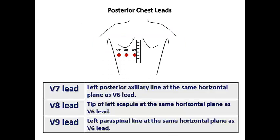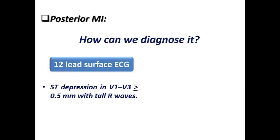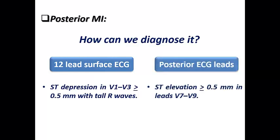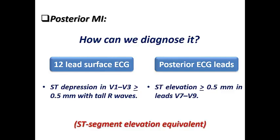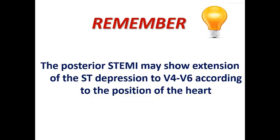The posterior ECG leads V7, V8, and V9, placed at the anatomical locations shown here, can demonstrate ST elevation, confirming posterior MI. Posterior MI can be diagnosed by the 12-lead surface ECG using V1 to V3, and it can be extended to other precordial leads. It can also be confirmed through posterior ECG leads showing ST elevation of more than or equal to 0.5 mm in V7, V8, and V9. That is why posterior MI is a STEMI equivalent.